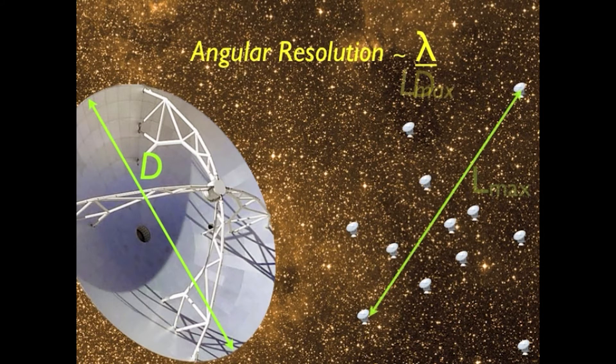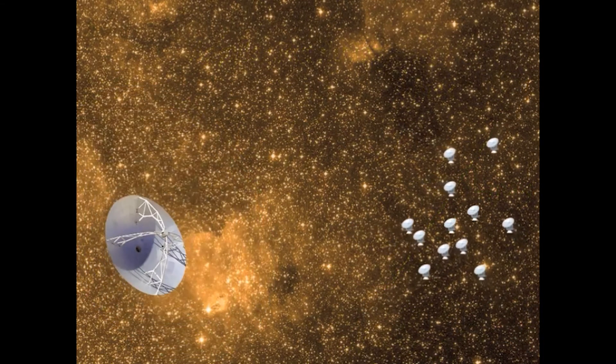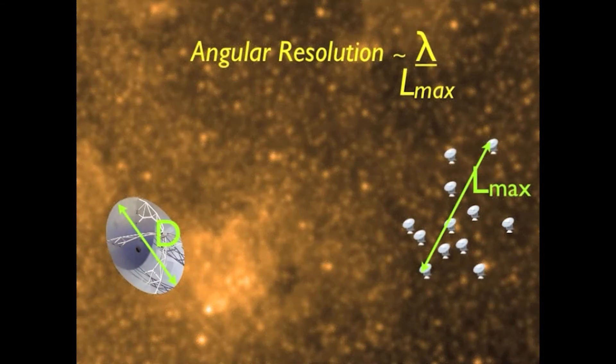For an interferometer, however, it is the longest distances between antennas that determine the angular resolution. A smaller mirror, or antennas closer together, can resolve only larger structures.